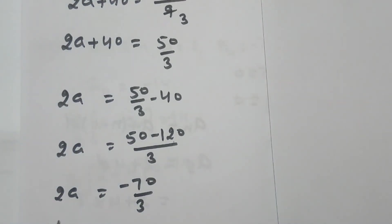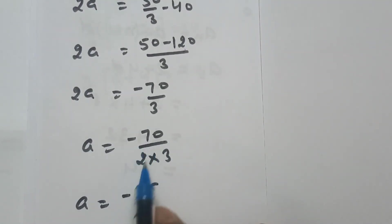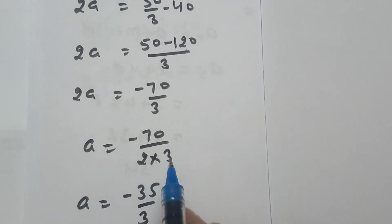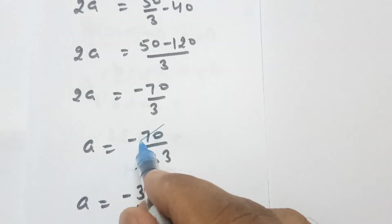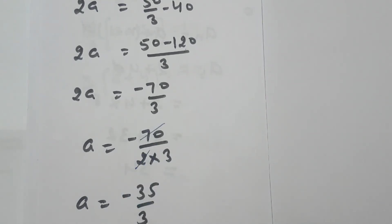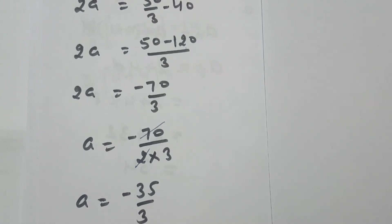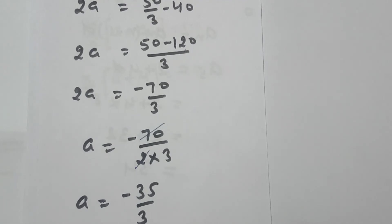So it is minus 70 by 3. Therefore 2a equals minus 70 by 3, and a equals minus 70 over 2 into 3. The 2 and 70 cancel — since 2 ones are 2 and 2 thirty-fives are 70 — so a equals minus 35 by 3. This is the value of a.